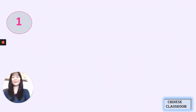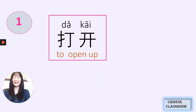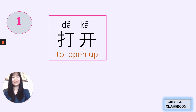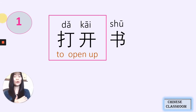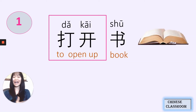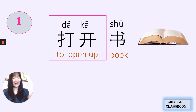The first one: 打开, 打开 — to open up. 打开. To open up what? For example, 打开书 — book. 打开书, to open the book.